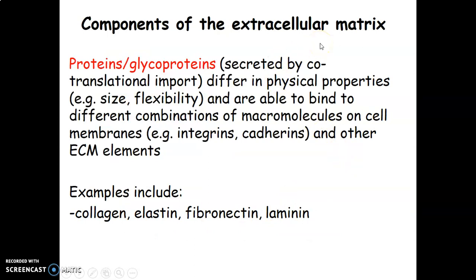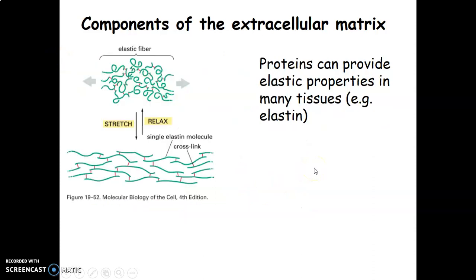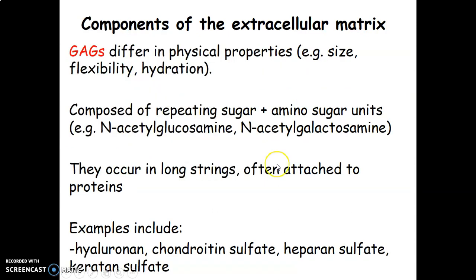The extracellular matrix contains glycoproteins. These define physical properties and bind macromolecules in the cell membrane such as integrins and other extracellular components. These proteins include collagen, elastin, fibronectin, and laminin. Elastin provides elastic properties, allowing stretch and relaxation due to cross-linkages. Glycosaminoglycans define physical properties and contain repeating amino sugar units, such as N-acetylglucosamine and N-acetylgalactosamine. They occur in long strings and often attach onto proteins. Examples include hyaluronan, chondroitin sulfate, heparan sulfate, and keratin sulfate.